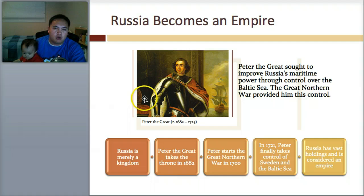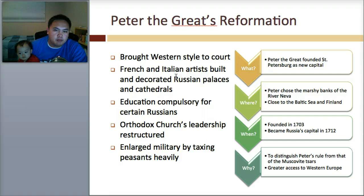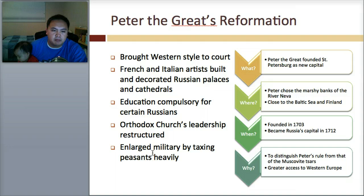Here's what Peter's reformation did. First of all, he brought Western style to courts — French and Italian artists built and decorated Russian palaces and cathedrals. Education was now mandatory for Russians. The Orthodox Church's leadership was restructured. And then there was an enlarged military. The reason they were able to pay for this military to build this great empire is because they taxed peasants heavily, which is why there's such a big upper and lower class divide.